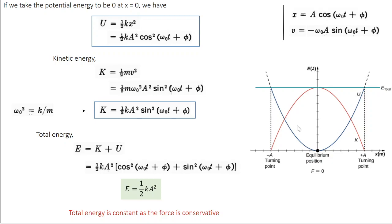These two curves are complementary. The total energy is the sum of kinetic and potential energies: E = ½kA²(cos²(ω₀t + φ) + sin²(ω₀t + φ)) = ½kA², since cos²θ + sin²θ = 1. If you look at the figure, at every point the sum of the two curves gives a constant value — a horizontal line. In a simple harmonic oscillator, the total energy is constant because the motion occurs under the restoring force alone, which is a conservative force.